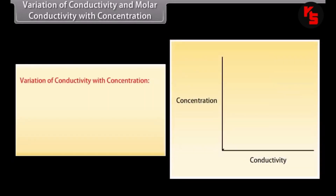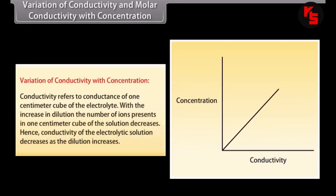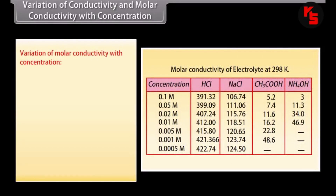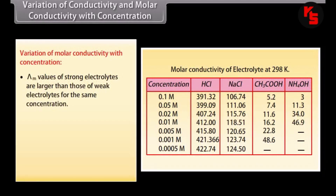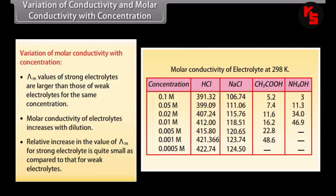Variation of conductivity and molar conductivity with concentration. Conductivity refers to the conductance of 1 cm³ of the electrolyte. With an increase in dilution, the number of ions present in 1 cm³ of the solution decreases; therefore conductivity of the electrolytic solution also decreases as dilution increases. Regarding molar conductivity: λ_m values of strong electrolytes are larger than those of weak electrolytes for the same concentration. Molar conductivity of electrolytes increases with dilution, but the relative increase for strong electrolytes is quite small compared to that for weak electrolytes.